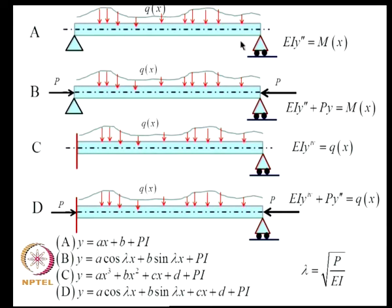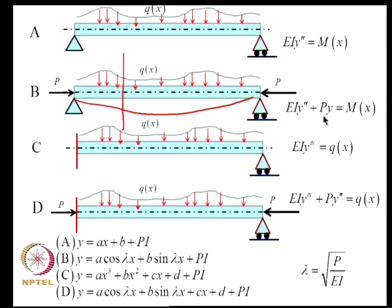Consider a simply supported beam carrying load Q. The governing equilibrium equation is EI·Y'' = M. When the beam also carries axial load P, the bending moment at any point includes a contribution P·Y due to the deflection in the deformed profile, so the equation becomes EI·Y'' + P·Y = M. For a statically indeterminate structure we write EI·d⁴Y/dx⁴ = Q, and with axial load: EI·d⁴Y/dx⁴ + P·d²Y/dx² = Q.